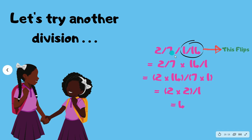Same thing here: 2 sevenths divided by 1 over 14. You just flip 1 over 14 to get 14 over 1, and multiply: 2 over 7 times 14 over 1. Multiply the numerators — 2 and 14 — and the denominators — 7 and 1 — to get 28 over 7. Since 7 goes into 28 four times, or you can simplify by putting 7 into 14 twice and 7 into 7 once, you end up with 4 over 1, which is 4.